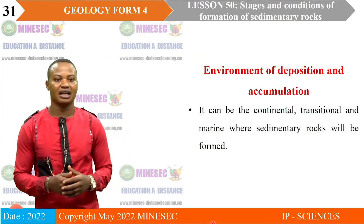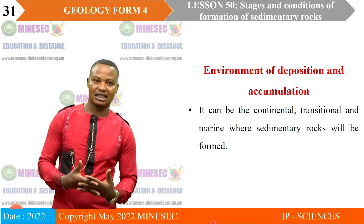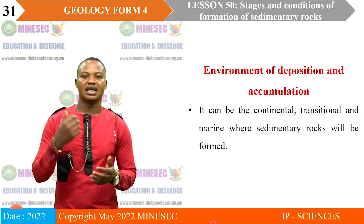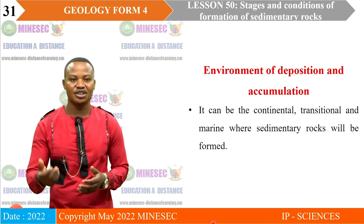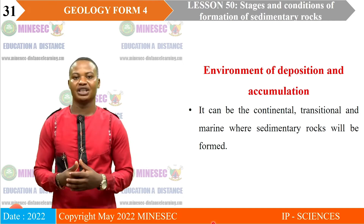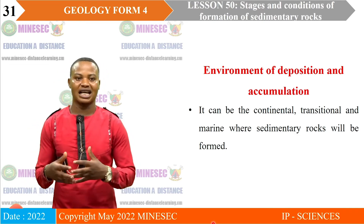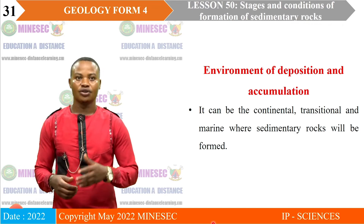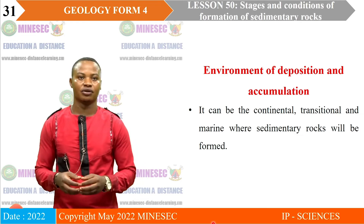The environment of deposition and accumulation is the final condition. Deposition can occur in the desert, in continental environments at the foot of mountains, in marshy environments, in brackish environments like lakes, or in transitional environments like deltas and lagoons. Based on the environment, different types of sedimentary rocks form. For example, in brackish environments with saline lakes, evaporites can be formed as a result of precipitation of salt.